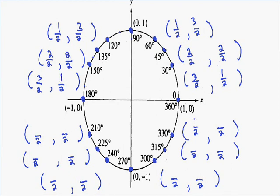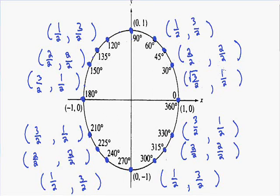For the bottom half of the circle, the x-coordinates again start with 3 and count down: 3, 2, 1, then go back up: 1, 2, 3. The y-coordinates start with 1 and go up: 1, 2, 3, then back down: 3, 2, 1. Now we need to put a square root on the numerator of every single coordinate. So in the top right we have square root of 3, square root of 1 (which is just 1), square root of 2, square root of 2, square root of 1 (just 1), and square root of 3. We do this for every single coordinate.